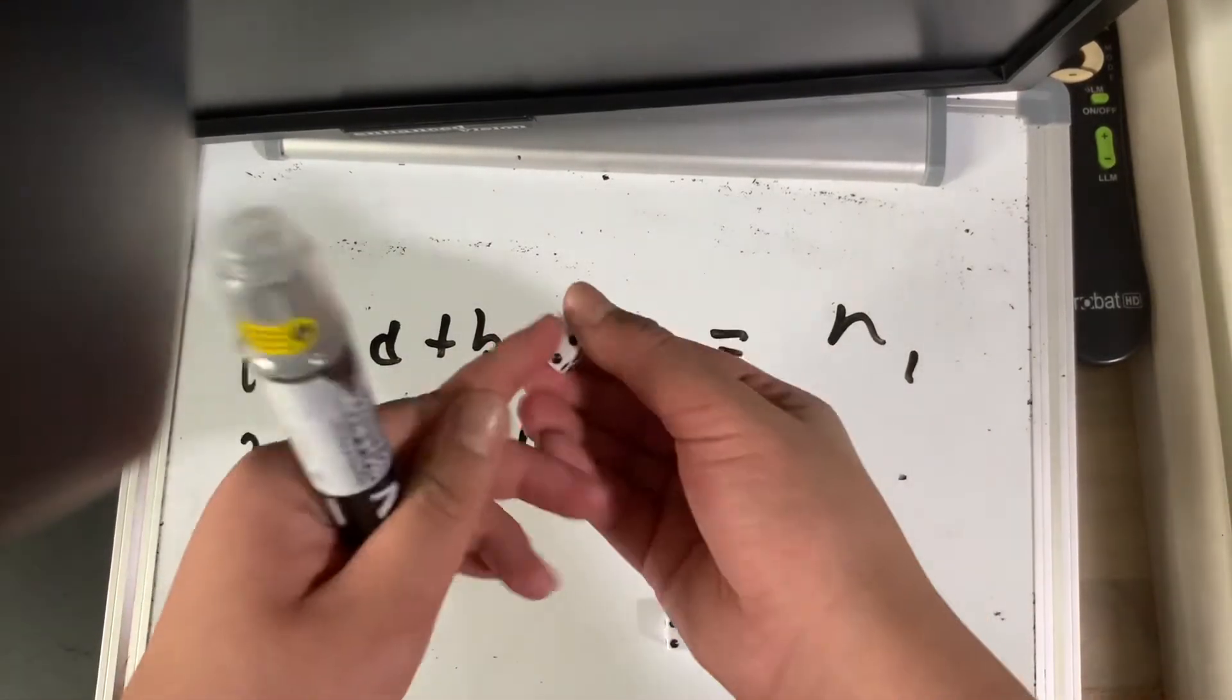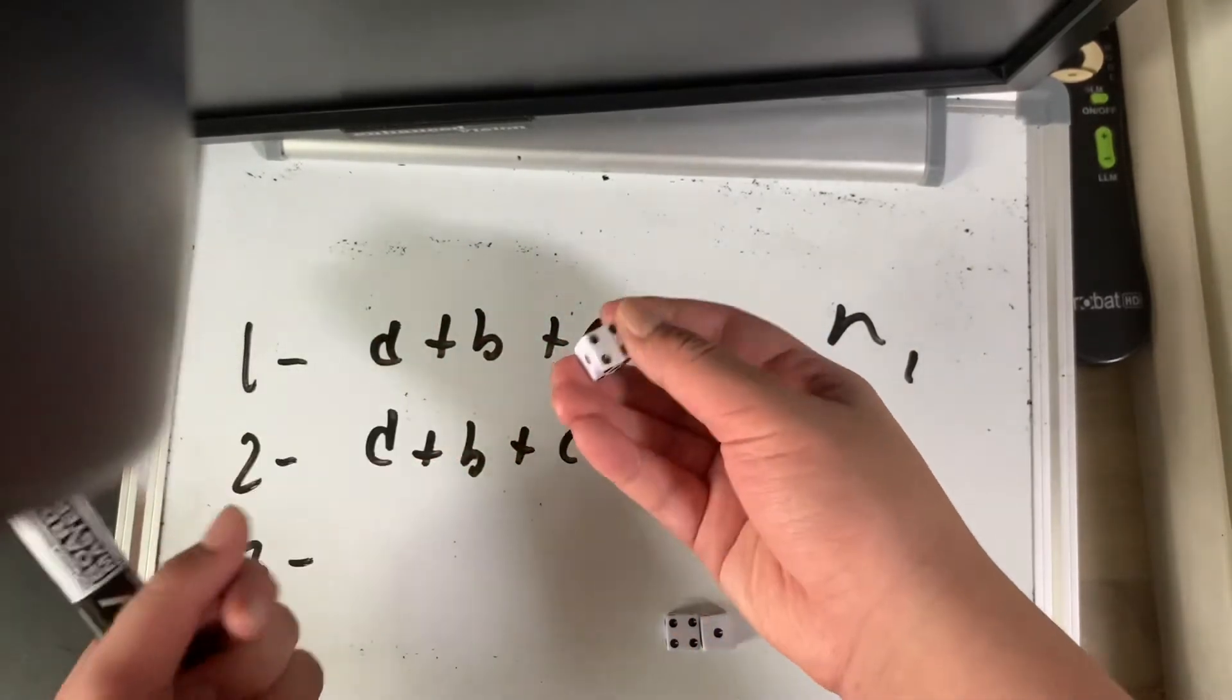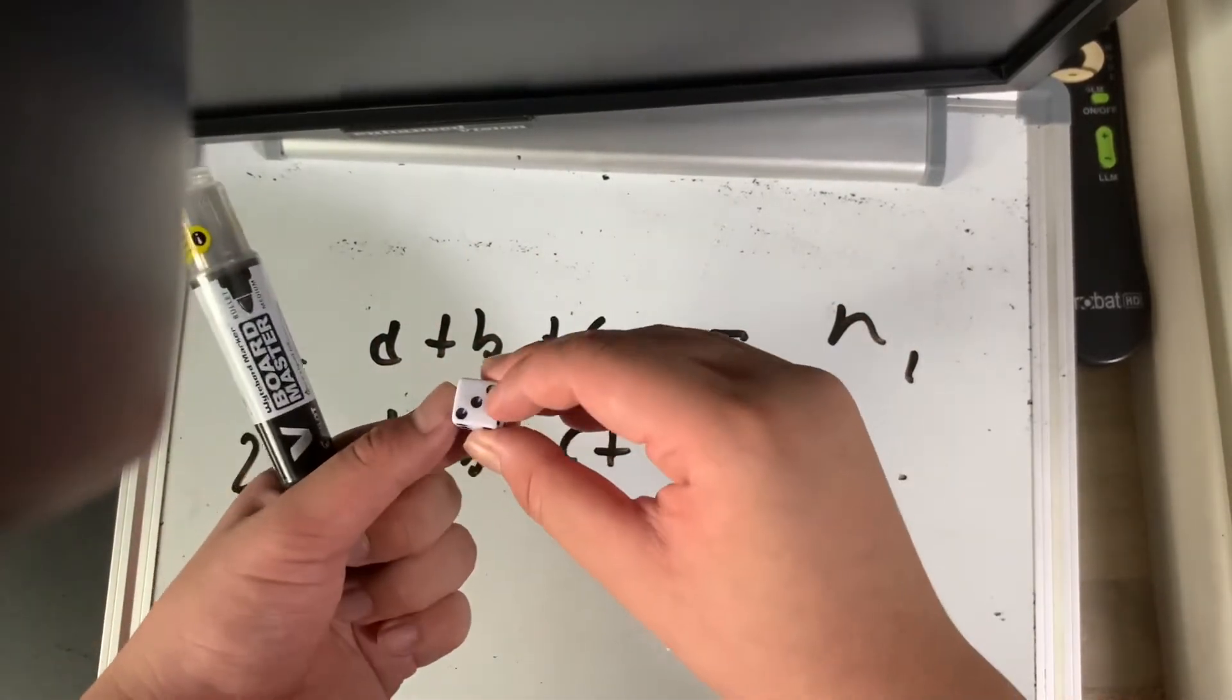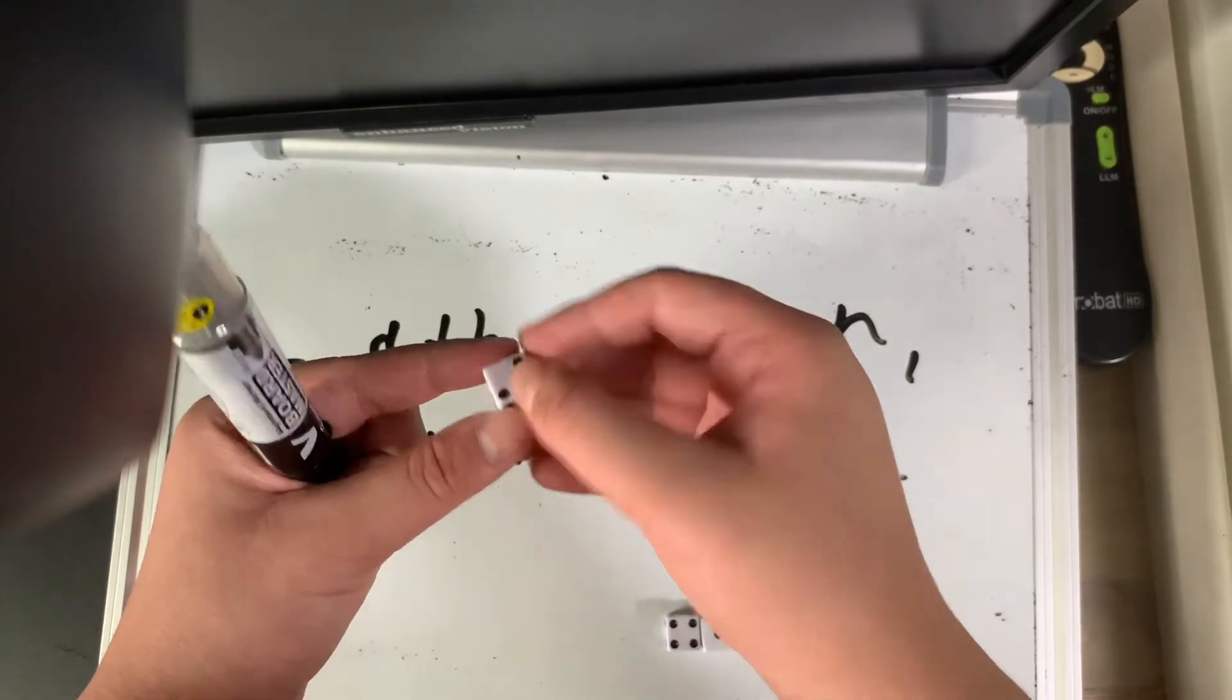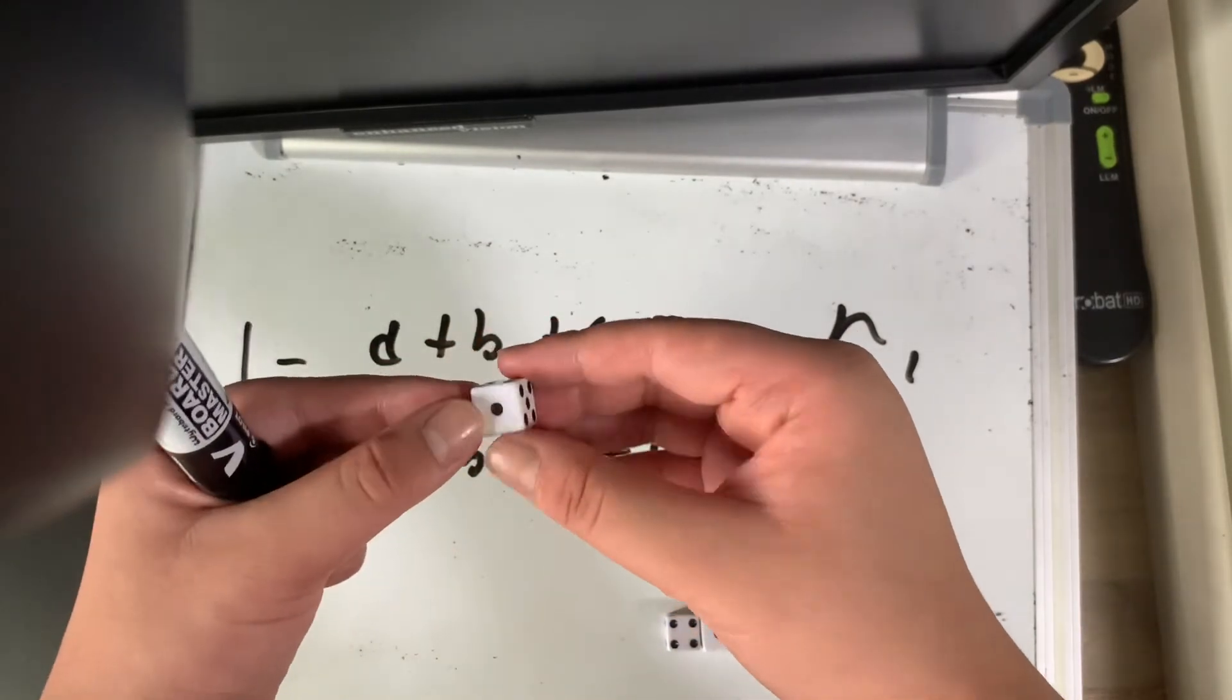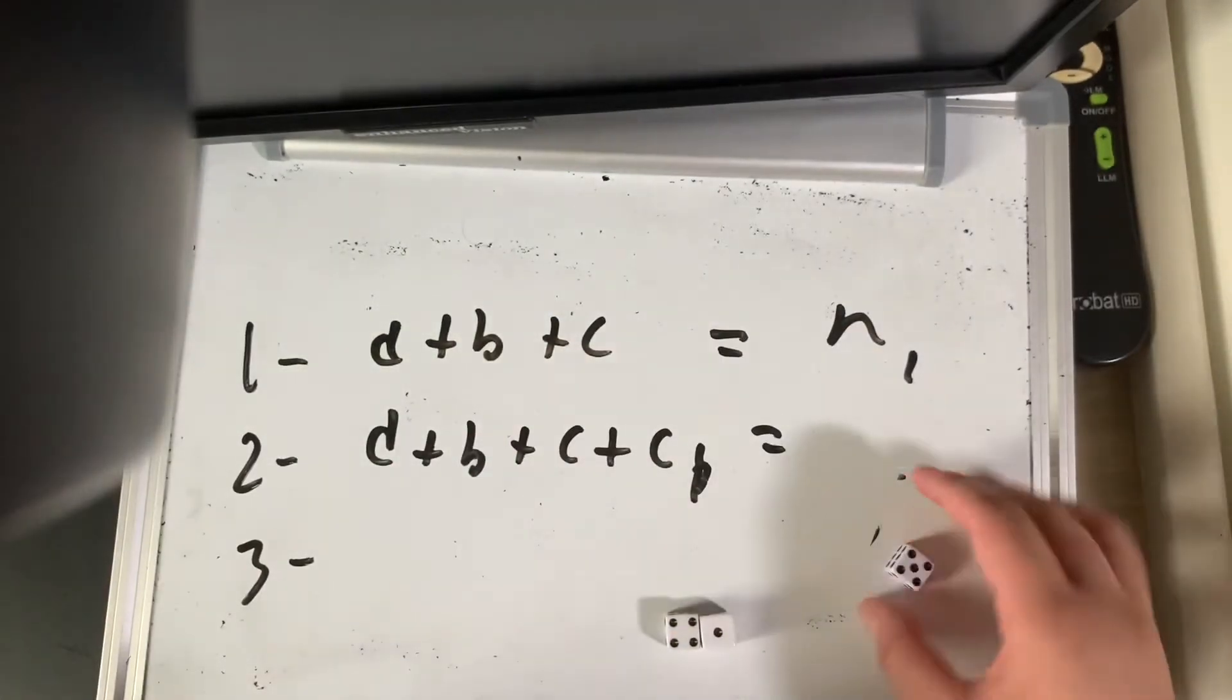Well guess what, any opposite faces of a die actually add up to 7. You see, 3 plus 4 add up to 7. See over here, 2 plus 5 add up to 7.